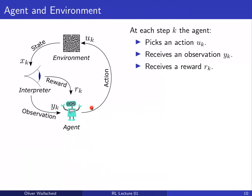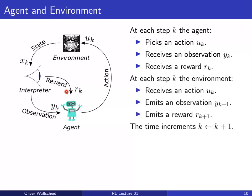At every time step k we can distinguish two perspectives. From the agent's point of view, it picks an action, puts it to the environment, and receives an observation y_k and reward r_k. From the environment's point of view, it receives the action and emits an observation and reward — but importantly at time step k+1, meaning there is a one-time-step delay between the action emitted and the state response by the environment.